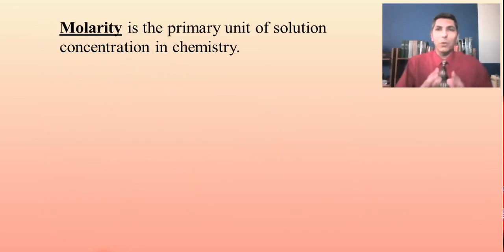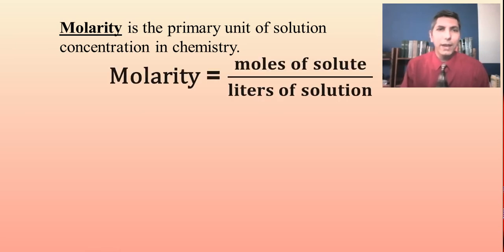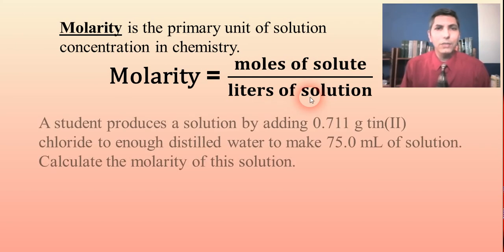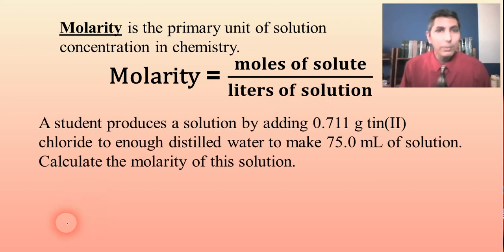Well, let's talk about how we quantitatively talk about solutions. Because all those other words were just qualitative values, you know, dilute, concentrated. Those are all relative terms. But when we talk about the actual mathematics behind this, molarity is the primary unit of concentration that we use in chemistry. And the way we calculate molarity is we take the moles of solute and we divide by liters of solution. So let's try an example with this. Here we have a student produces a solution by adding 0.711 grams of tin II chloride to enough distilled water to make 75.0 milliliters of solution. Calculate the molarity of this solution.